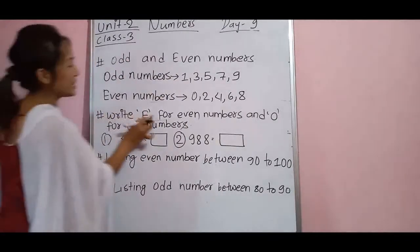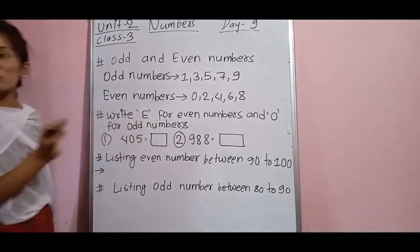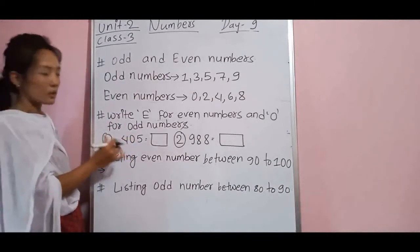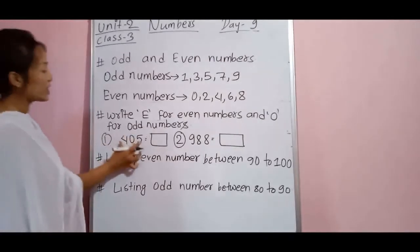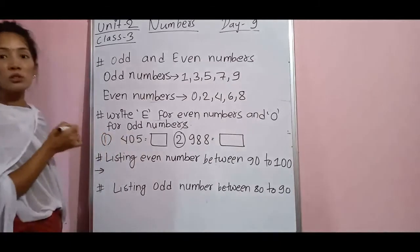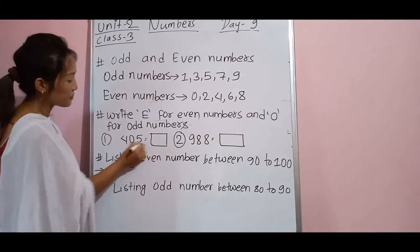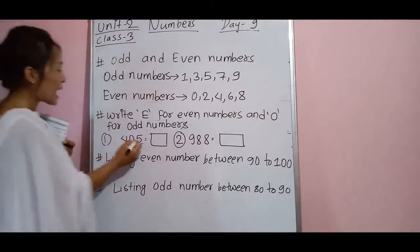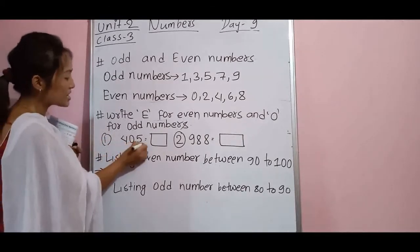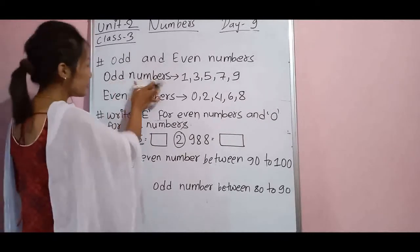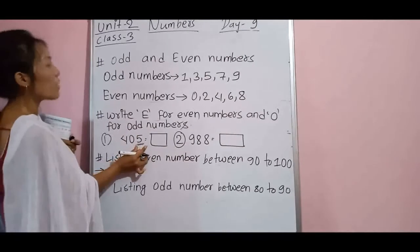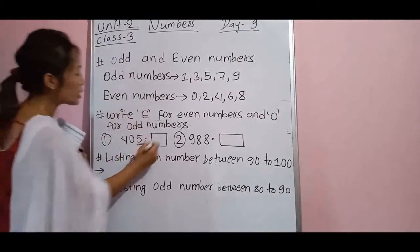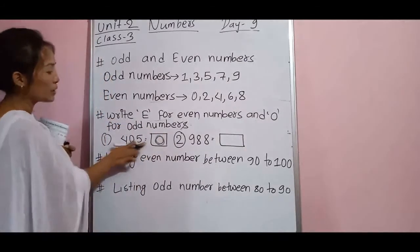Likewise here are the even numbers: 0, 2, 4, 6, 8 — you have to learn these. Now here is a question: write E for even number and O for odd number. Here is a number 405 — how to identify whether this is even or odd? You have to look at the last digit of the given number. In 405, the last digit is 5. Since 5 is in the odd number group, this whole number is odd, so write O.